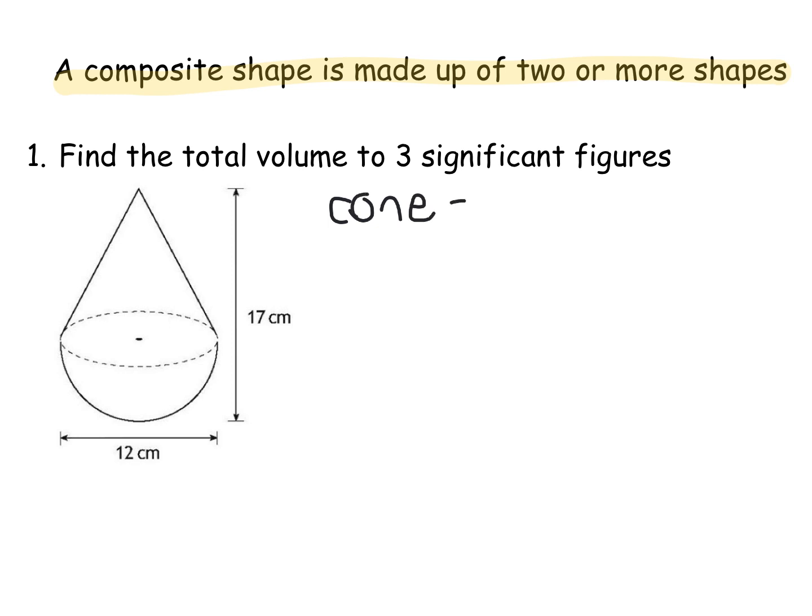Now formula for a cone, make sure you copy it down correctly, is one third pi r squared h. Now I need to know the radius and the height for this one. The radius is this distance here. Because these shapes are sat exactly on top of each other, they have the same radius. So if my diameter is 12, my radius is 6. So I have one third times pi times 6 squared times... Now a lot of people would write 17 for the height here, but be careful. 17 is the height of the full shape. The height of the cone is a bit tricky to see, but if your radius is 6, it means that all these distances here that I'm drawing in are all 6 because they're all from the centre to the outside of the sphere. So this little height up to here is 6. So it means that the height of the cone must be 11 because 6 add 11 is 17.